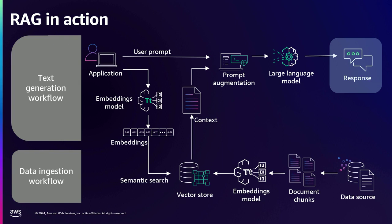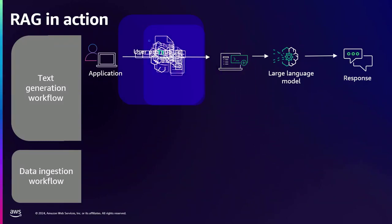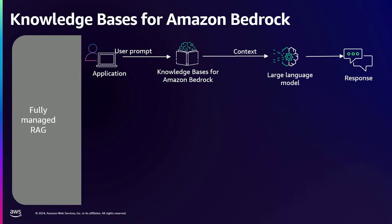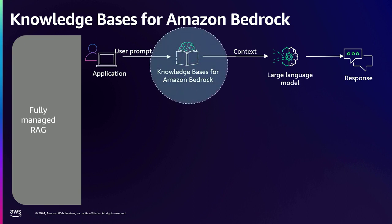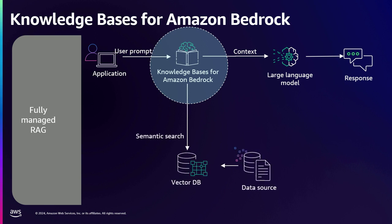Imagine if the prompt augmentation, the conversion of the user question to embeddings, and the creation of the vector database were all managed for you by an AWS service. This is exactly what Knowledge Bases for Amazon Bedrock does. Amazon Bedrock is the fastest way to build and scale your generative AI applications in AWS using a single API, with a choice of multiple foundation models. Knowledge Bases for Amazon Bedrock provides a single API and creates an end-to-end RAG workflow for you.